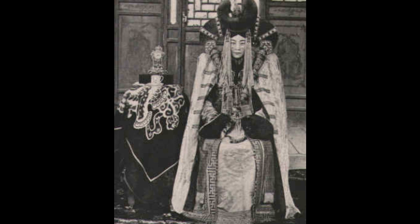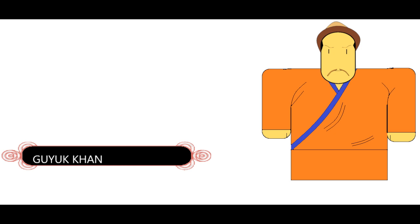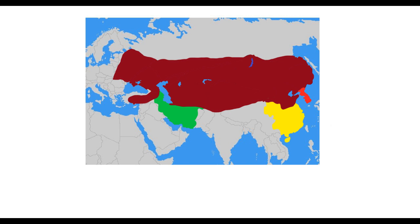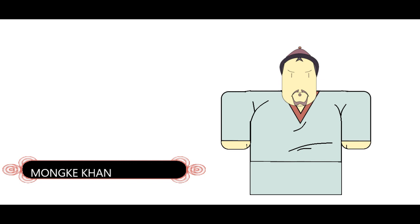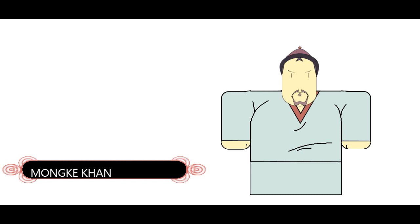Following Ogedai's death, his wife Töregene took over as regent and ruled until the next Kurultai, called in 1246. There the ill and heavy-drinking Güyük was chosen as Khan, but he only ruled for two years. He planned a massive conquest of the Middle East but only managed a bit of Anatolia before he died. Güyük was succeeded by his wife Oghul Qaimish, who later stepped down because she lacked the skills to rule. The nobles offered the crown to Batu, a great general, but he refused and instead nominated Möngke, a descendant of Genghis's son Tolui rather than the traditional Ogedai line. A Kurultai held in 1251 confirmed Möngke as Khan, despite opposition from the Ogedaian and Chagataian nobles, and after Möngke was elected he led a purge against them.